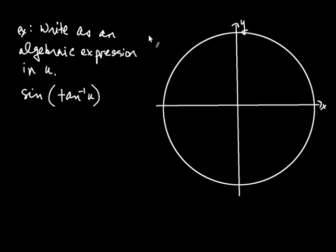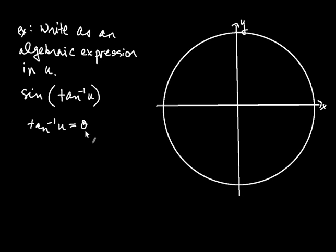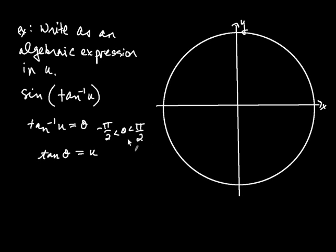In this problem we're asked to write as an algebraic expression in u: sine of inverse tangent of u. The first thing I note is that inverse tangent of u is an angle — inverse trig functions always give an angle. So the whole expression sine of inverse tangent of u means: tangent of the angle equals u. But don't forget the restriction that the angle for inverse tangent must lie between negative pi over 2 and positive pi over 2.